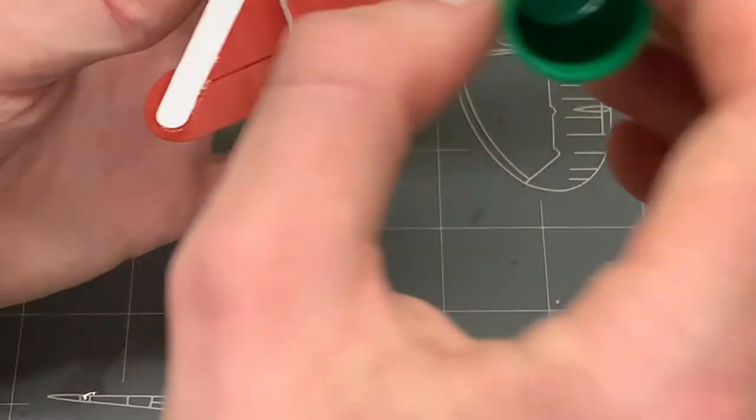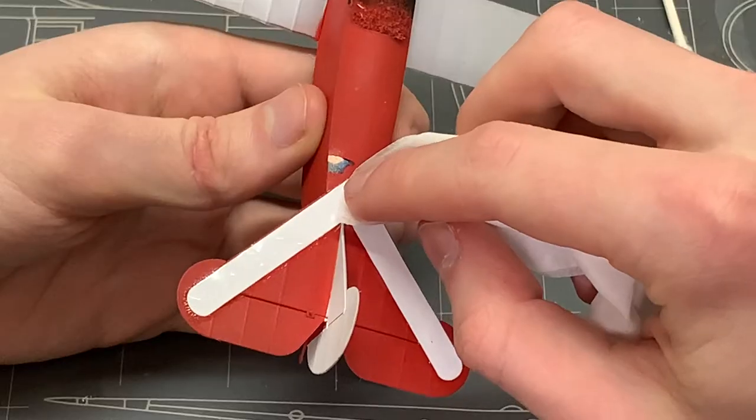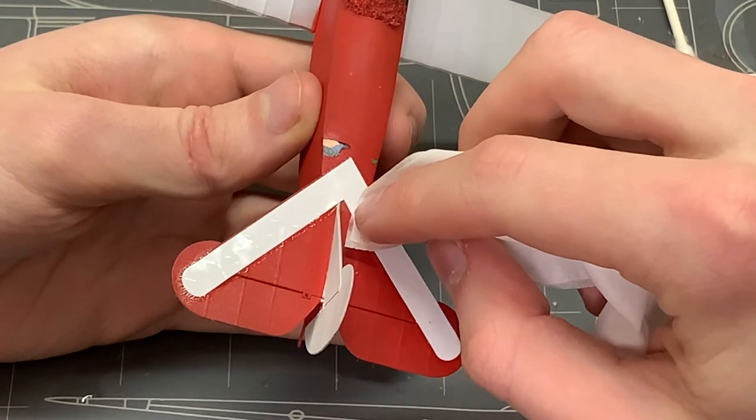This white stripe on the tail was particularly thick for some reason, so it required a lot of mark softer to get it properly sitting in place.